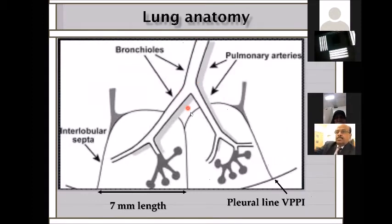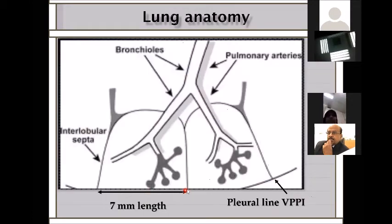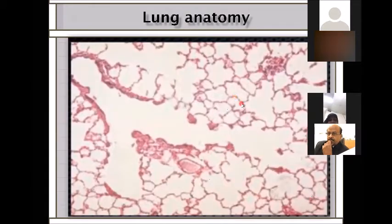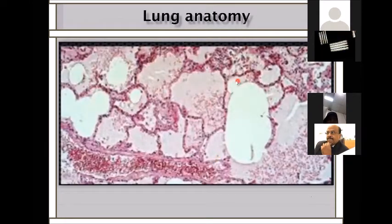This is a very important picture for understanding lung ultrasound. You can see the basic backbone: two alveoli with three septi, with bronchioles and pulmonary artery. The visceral-pleural parietal interface (VPPI) appears on ultrasound. Critically, the distance between two septi is 7 mm. In the normal lung, alveoli walls are thin and clear; when inflamed, you see thickening of septi and distortion of the picture.